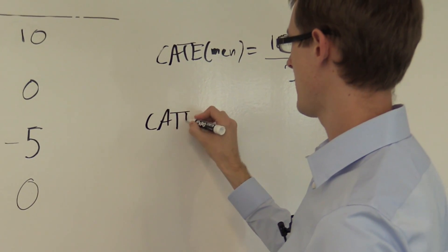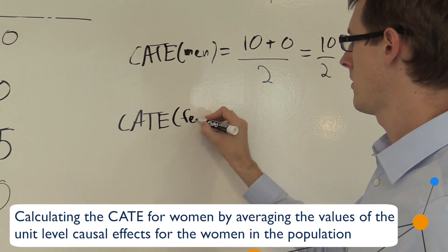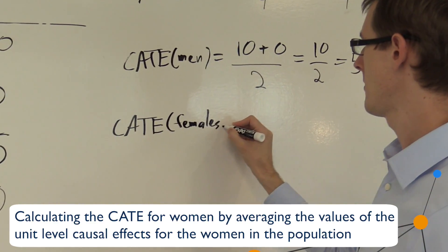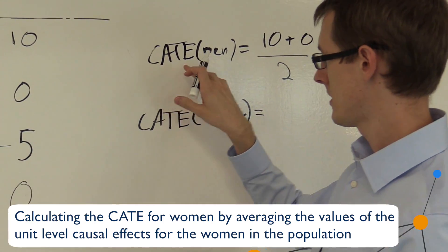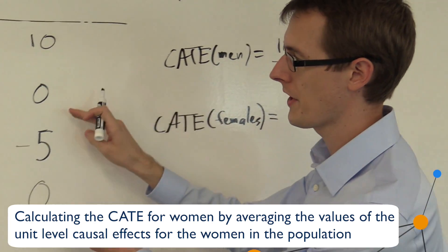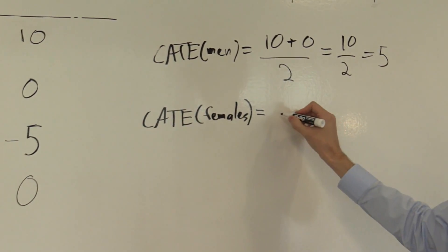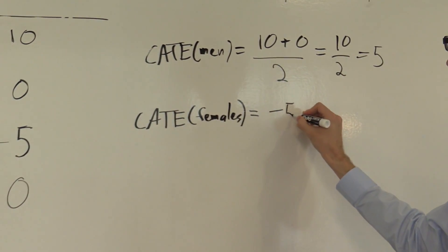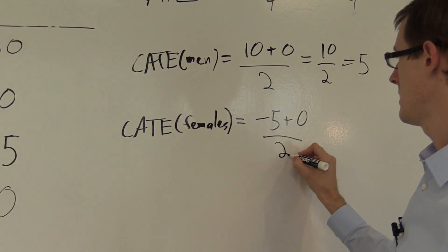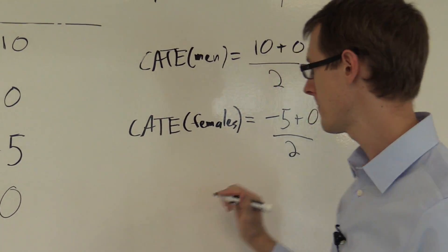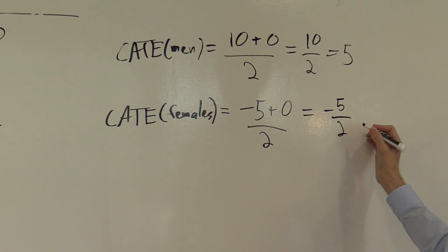Finally, let's look at the conditional average treatment effect for women. Just like with men, we look at the average for only the women and throw out the men. So that's (−5 + 0) / 2, because there are 2 people, which equals −5/2.